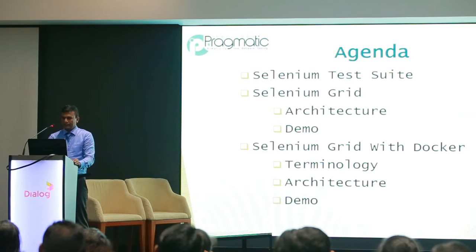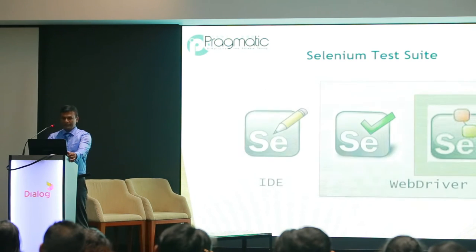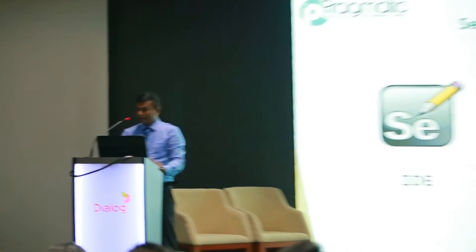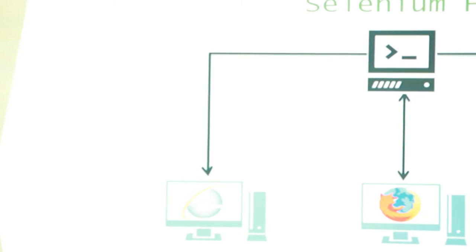Let's move into the Selenium Test Suite. As you understand, the Selenium Test Suite mainly consists of three tools: Selenium IDE, WebDriver itself, and Selenium Grid — which is within Selenium WebDriver. It comes with Selenium WebDriver APIs as well as a separate Selenium server. Selenium Grid architecture mainly consists of a hub where you can pass your tests into the hub, and the hub will distribute the tests among the nodes — basically the machines where you have the client browsers running.